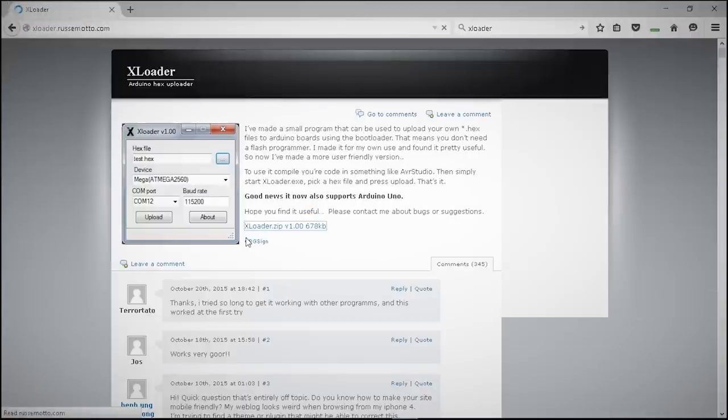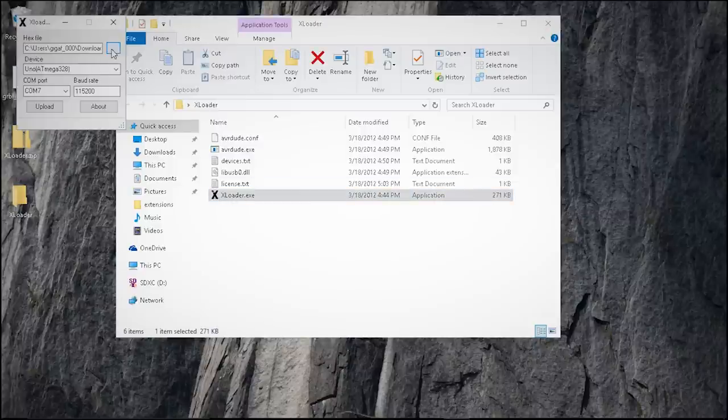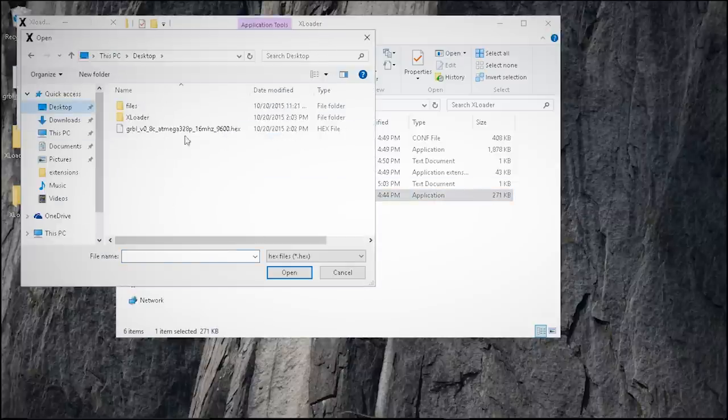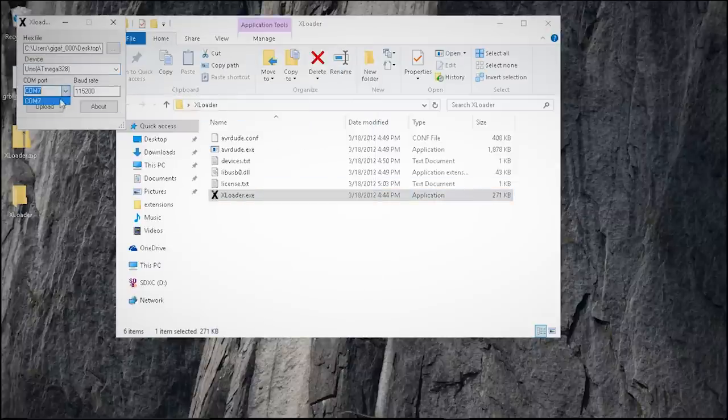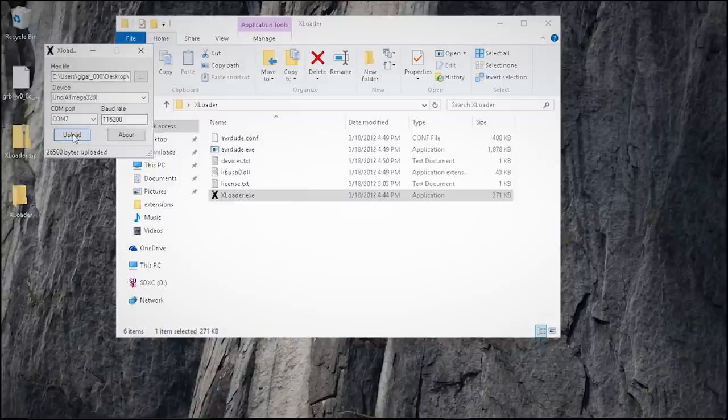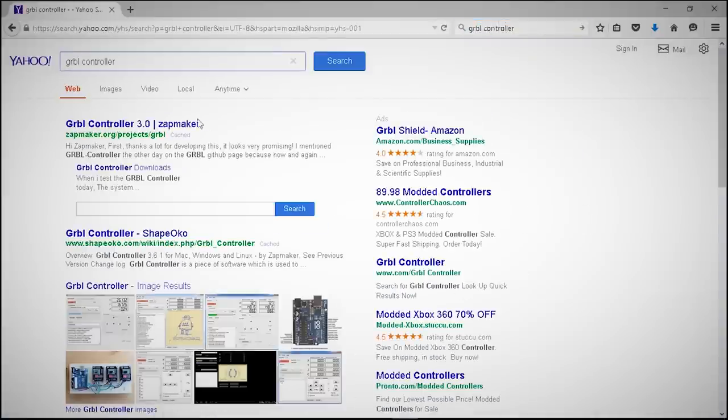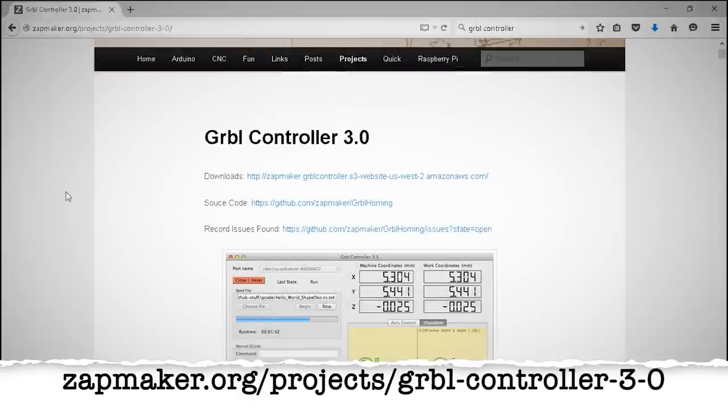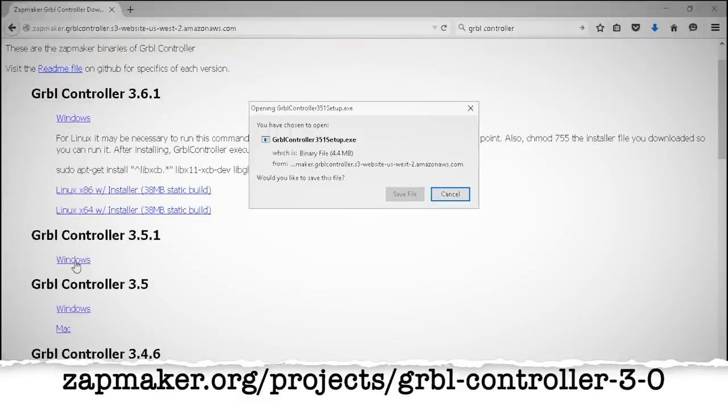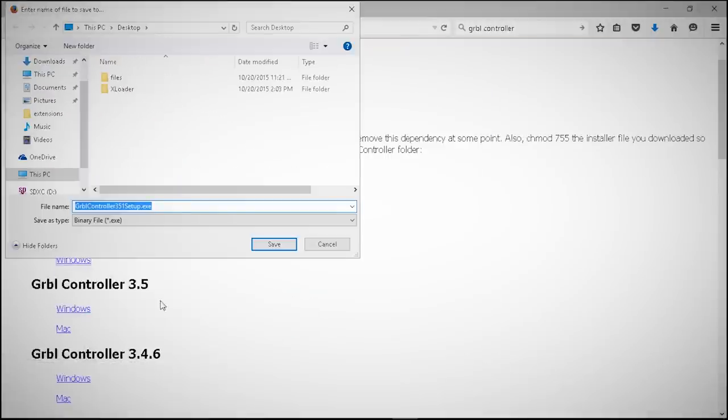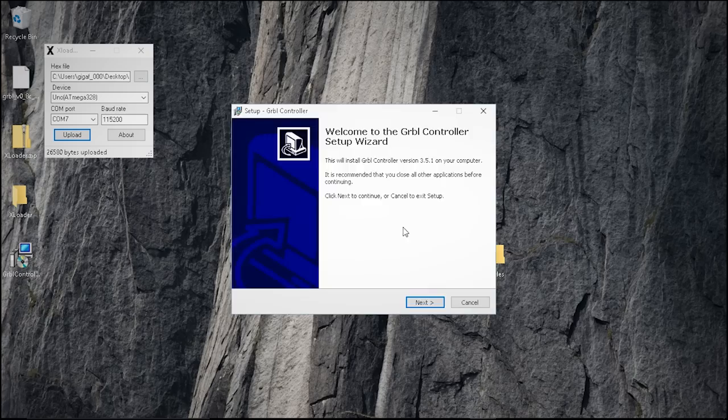With the Arduino plugged in, open up XLoader, point it to your hex file, select the Arduino version that you're using, the COM port that it's plugged into, and then just click upload. Once that's done, the next thing we need is to give ourselves a way to control it. And there's a free piece of software online called Gerbil Controller that you can download that will be perfect for what we need. I'm going to be using version 3.5.1 of this software.